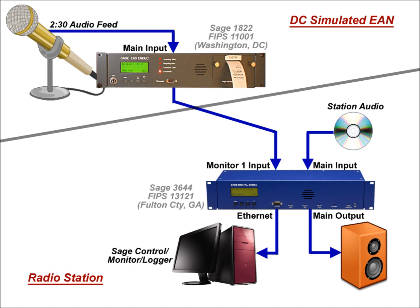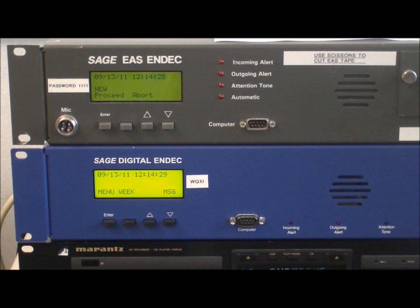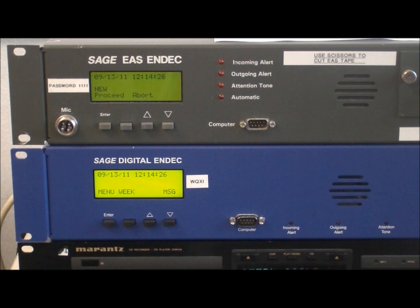Recordings were used to provide the EAS originating message and to simulate radio station programming. For the test we used a variation of EAS copy that's part of the Georgia State EAS plan. The message was read a number of times in order to fill 2 minutes and 30 seconds, which will be the approximate length of the real message. Since we did the test, FEMA released the actual copy that will be used on November 9th, but the message length and the results should be similar to this demonstration.